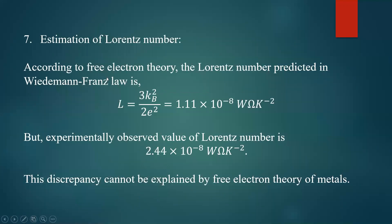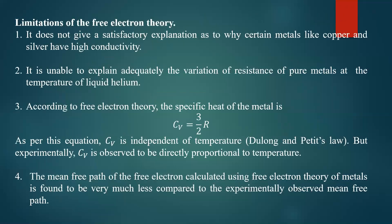The last failure: it cannot explain the discrepancy in the Lorentz number. According to free electron theory, the Lorentz number predicted in the Wiedemann-Franz law is L equal to 3kB² divided by 2e², giving a value of 1.11 × 10⁻⁸ SI units. But experimentally, it is observed that the Lorentz number is 2.44 × 10⁻⁸ SI units — the experimental value is almost twice the theoretically predicted value. This discrepancy cannot be explained using free electron theory, and so here it fails. These are the observations that cannot be explained by free electron theory.